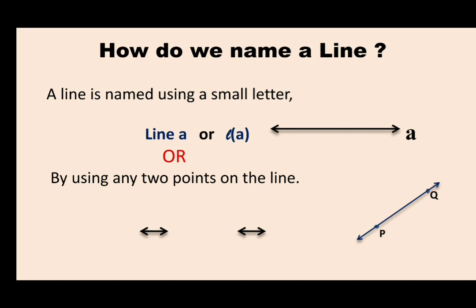This can be seen here. P and Q are the two points on the line, and those two points can be taken to name its line. So, line PQ or you can say line QP. It can be denoted by the symbol of line.